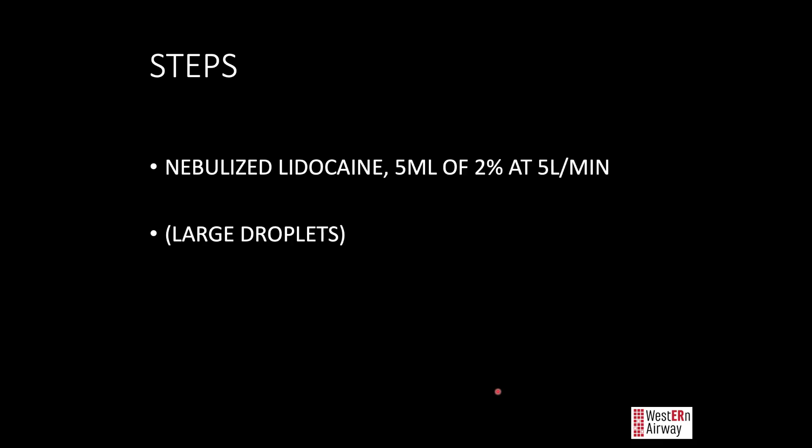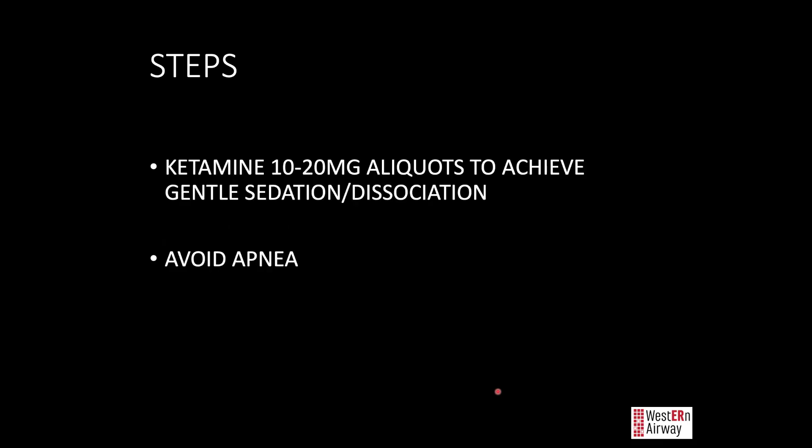Different techniques get lidocaine down into the glottic structures — spraying with a mucosal atomizer device during inhalation directs lidocaine toward the cords. You can also administer lidocaine through nebules: give 5 mL of 2% lidocaine. The key is to produce large droplets — we're not trying to get lidocaine deep into the alveoli, we want it staying in the posterior pharynx. Set your oxygen at only about 5 liters per minute, not the usual 15, to generate large droplets. Then administer ketamine in low-dose aliquots of 10 to 20 milligrams to achieve gentle sedation while avoiding apnea.